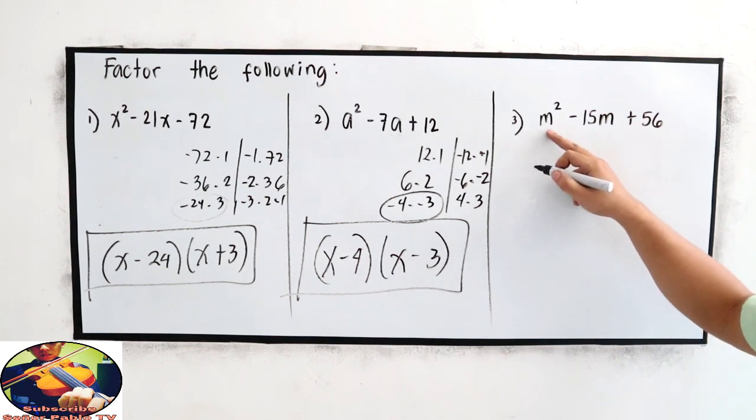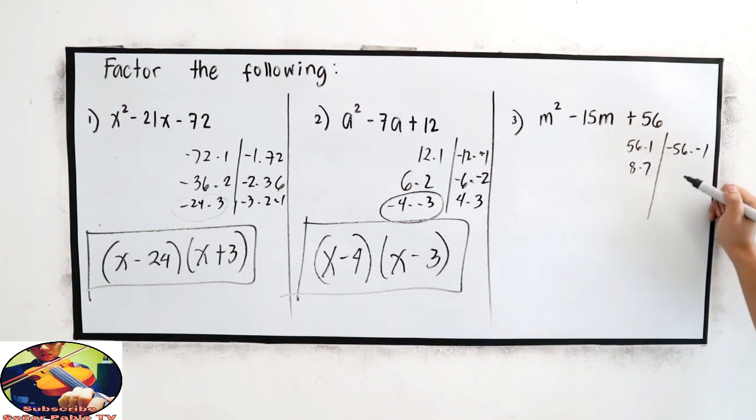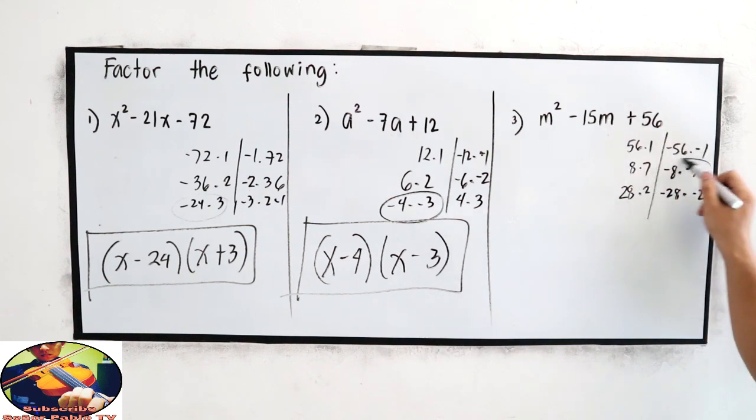Number 3, m cubed minus 15m plus 56. Factors of 56 are 56 times 1, negative 56 times negative 1, 8 times 7, negative 8 times negative 7. 28 times 2, negative 28 times negative 2. The sum must be negative 8, so obviously, that is negative 8 and negative 7.